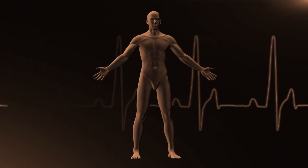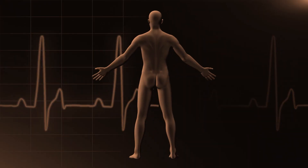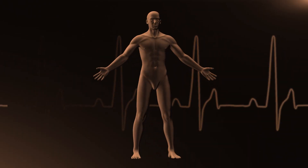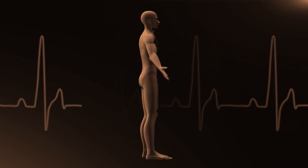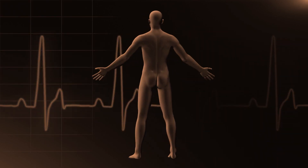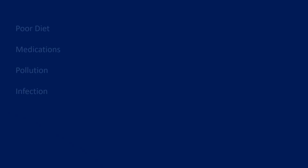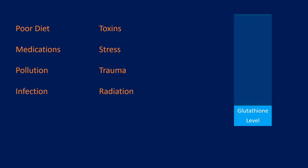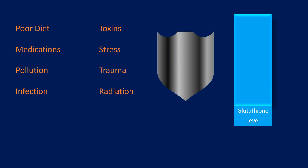The body manufactures its own glutathione, and the production and recycling of this important molecule require the action of specific enzymes. However, poor diet, medications, pollution, infection, toxins, stress, trauma, and radiation all deplete glutathione levels.